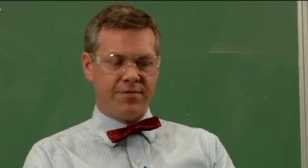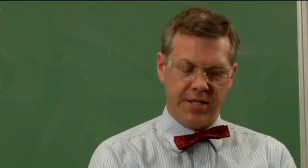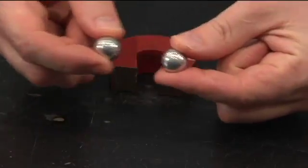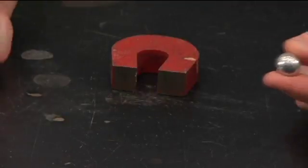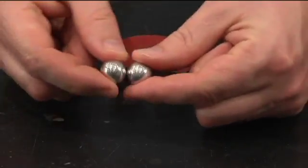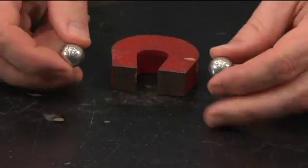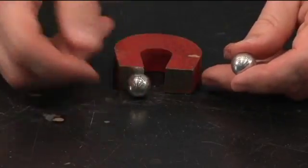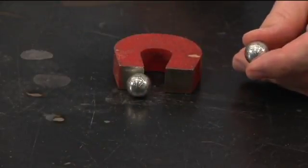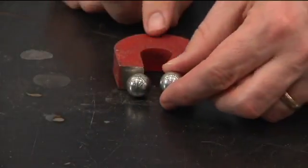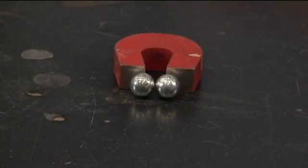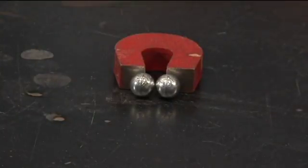Another way to think about it — I have two metal balls here. Now these metal balls normally don't stick together. However, if I bring them close to my bar magnet, one will stick to that side of the magnet, one will stick to that side of the magnet, and now the magnet holds the balls together.